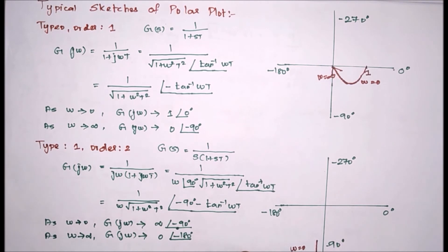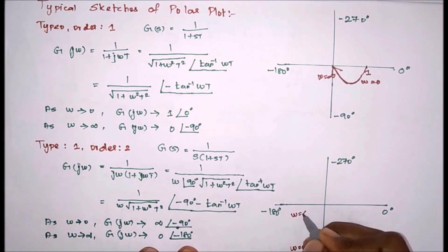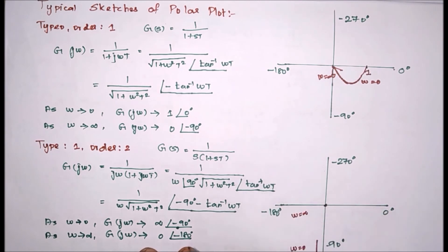Next step, when omega value equal to infinity, 1 by infinity equal to 0, so this will become 0. Tan inverse of infinity equal to minus 90, minus 90 minus 90, minus 180. It means when omega equal to infinity it will reach 0 but through minus 180. This is minus 180.